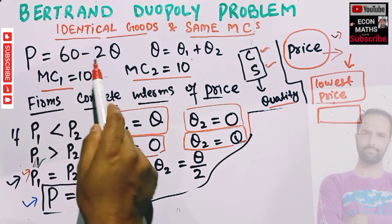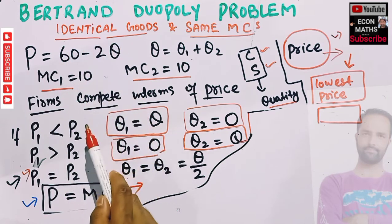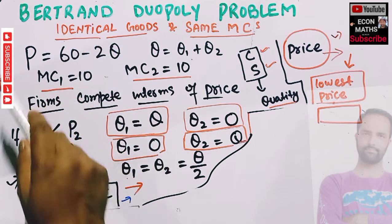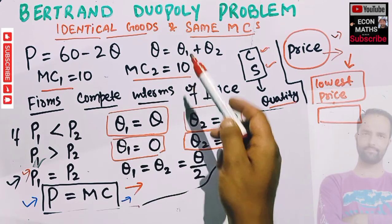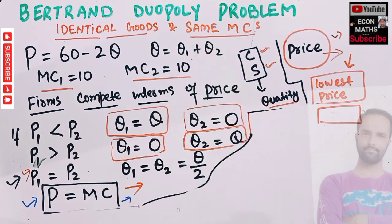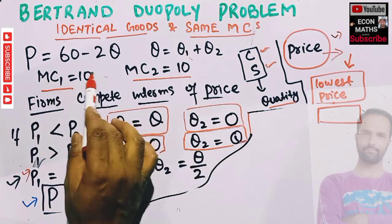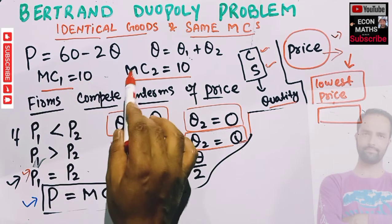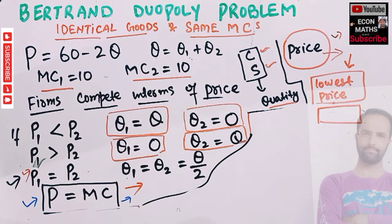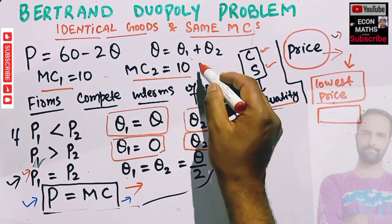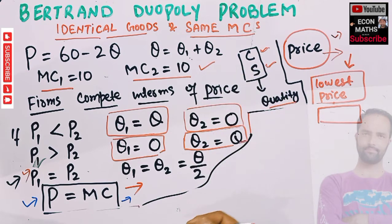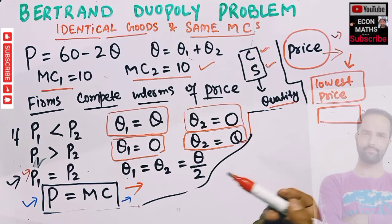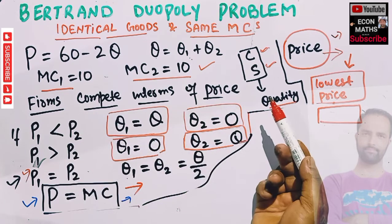Let us say we are given the market demand function P = 60 − 2Q, where Q is the total output and P is the price. Total output Q equals the output of firm one plus the output of firm two. The marginal cost of firm one equals 10 and the marginal cost of firm two also equals 10 — they have identical marginal costs.